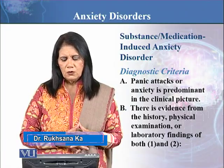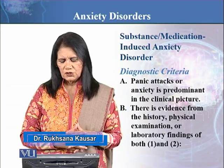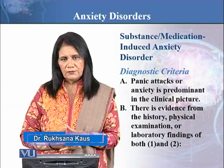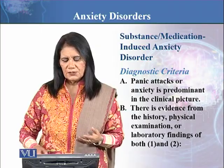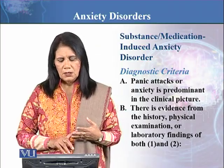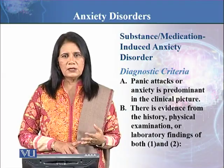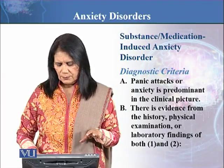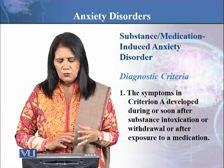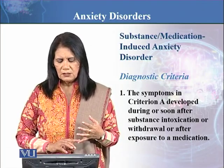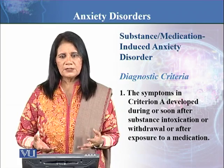There is evidence from the history, physical examination, or laboratory findings. There is evidence that both criteria one and two are present. For example, when you take history or do an examination, you have to understand that the particular substance taken has certain chemical properties that you can identify.